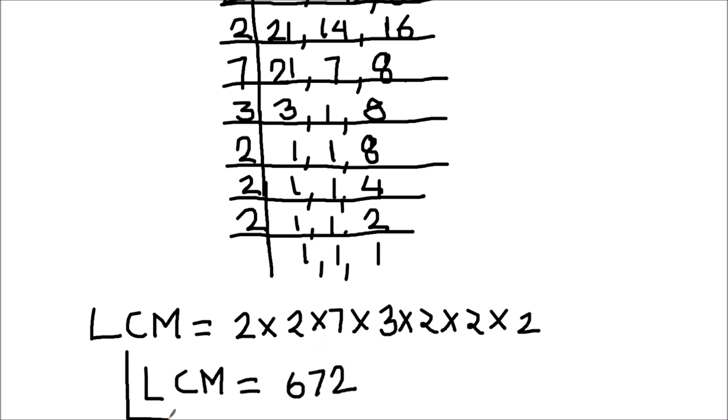The LCM of 21, 28, and 32 is 672. So this is how we find the LCM of three numbers.